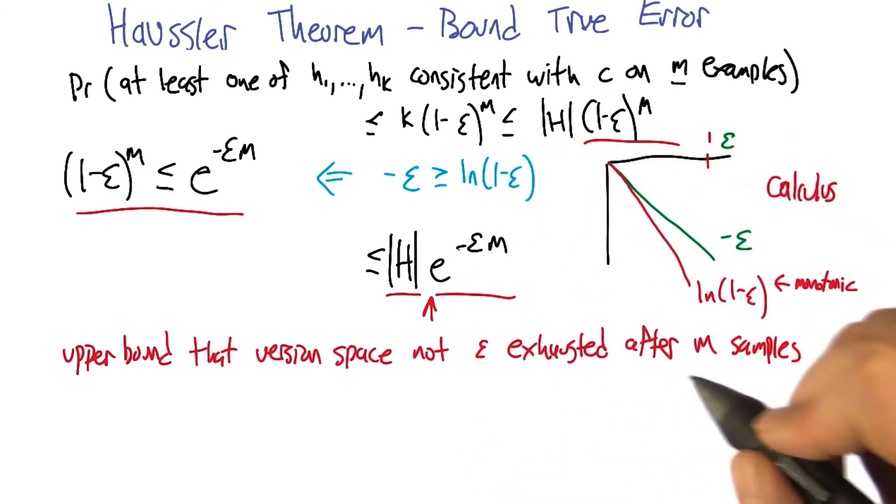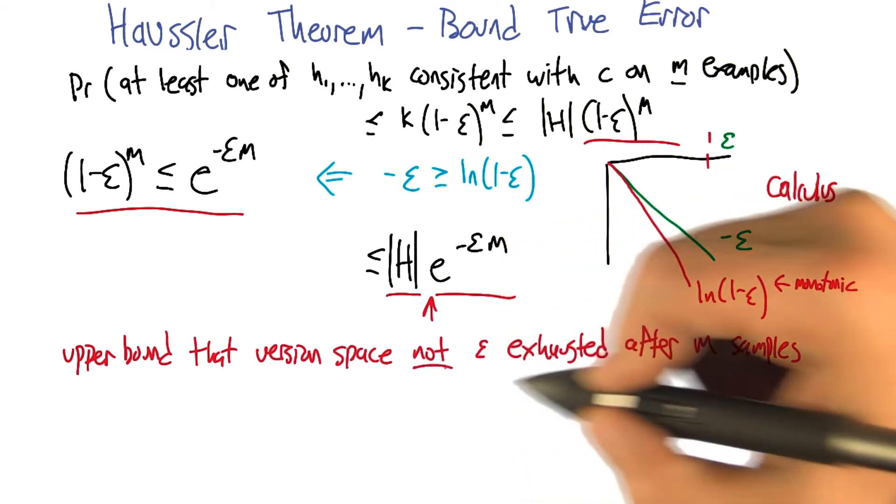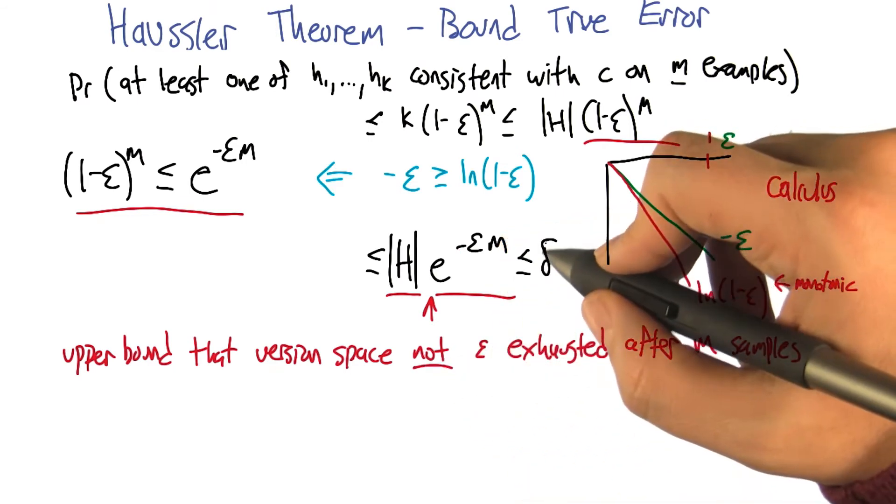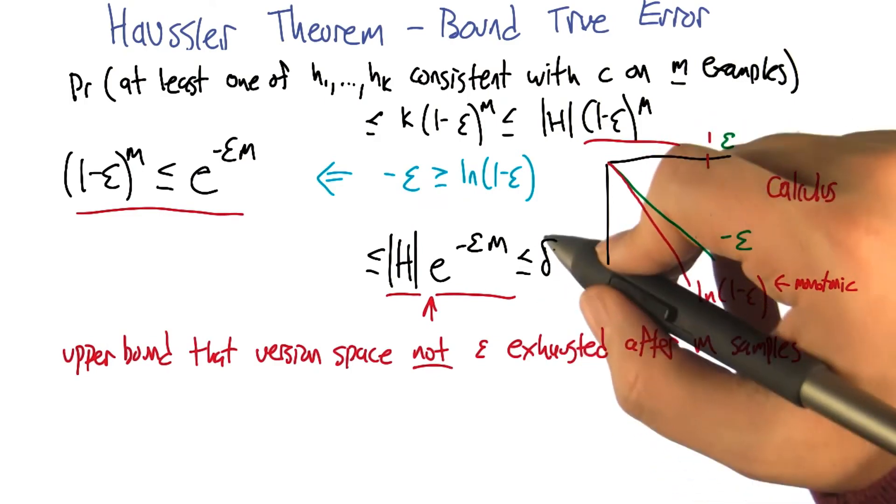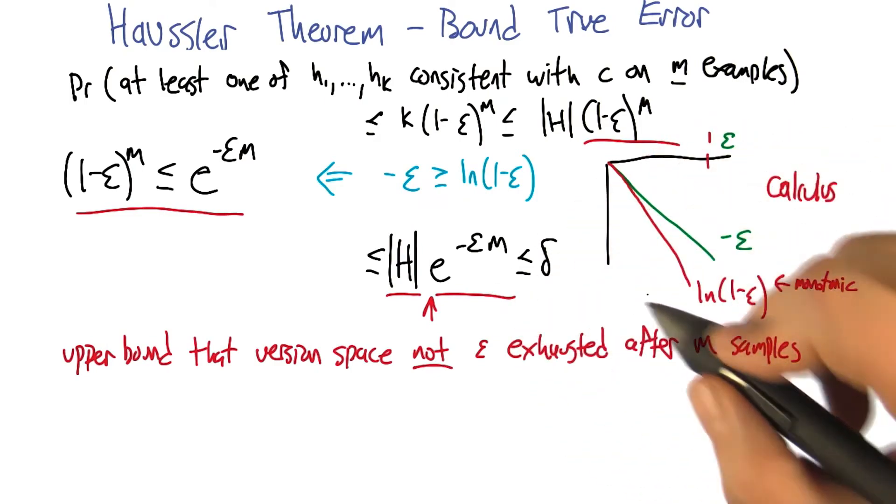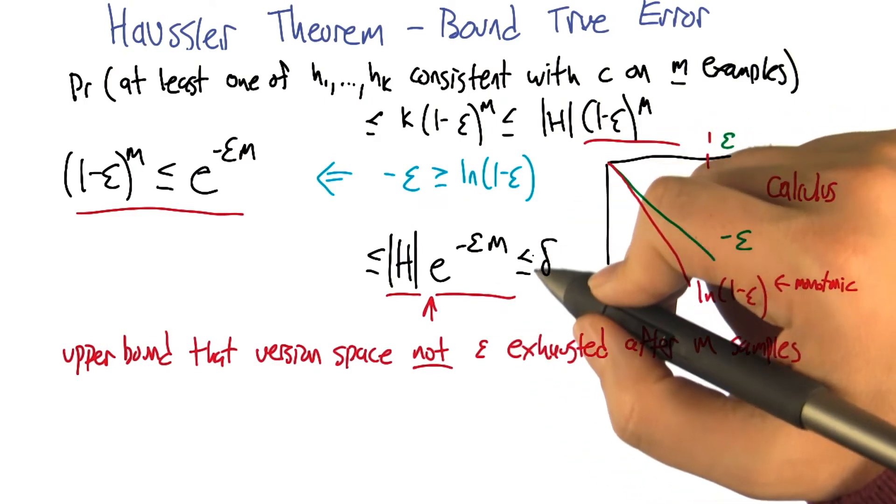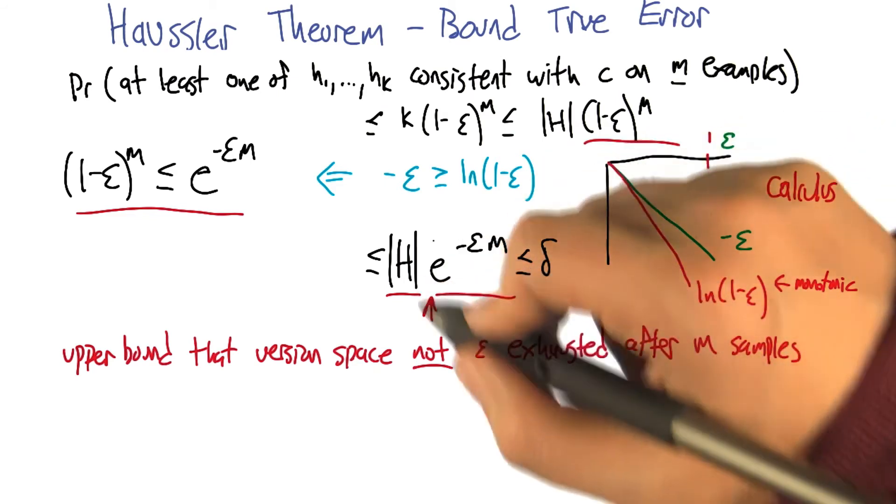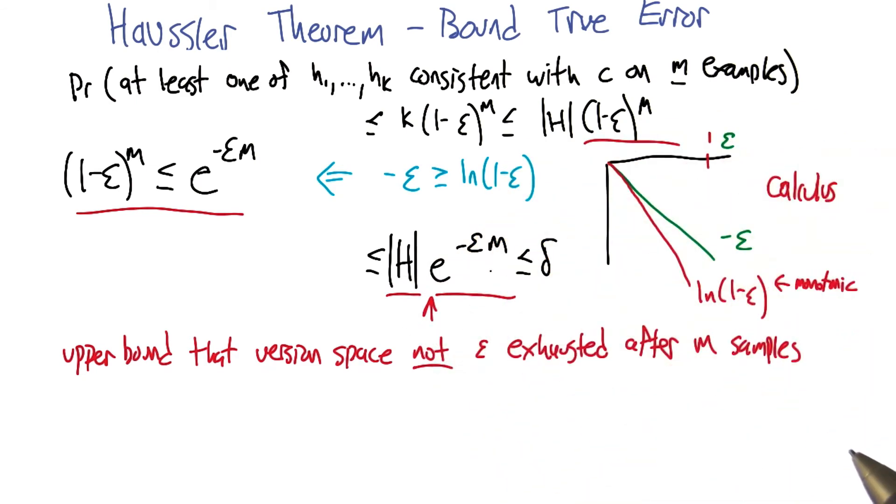So what this is, is an upper bound that the version space is not epsilon exhausted after m samples. And that is what we would like delta to be a bound on that. So the delta is the failure probability essentially. So the failure probability ought to be bigger than or equal to this expression here.